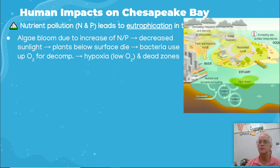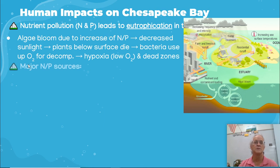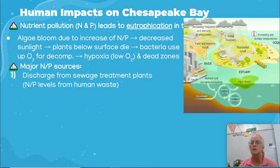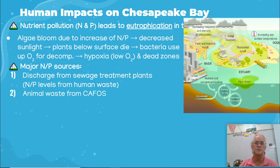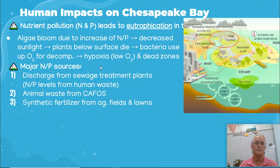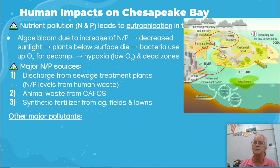These are different ways that eutrophication has happened here. Some of the sources for the nitrogen and phosphorus: discharge from water treatment plants — if not treated properly, there's going to be higher nitrogen and phosphorus levels. Animal waste from farms. Synthetic fertilizer from farms and from people's lawns. So you've got water treatment here, and animal waste and synthetic fertilizers going in here.